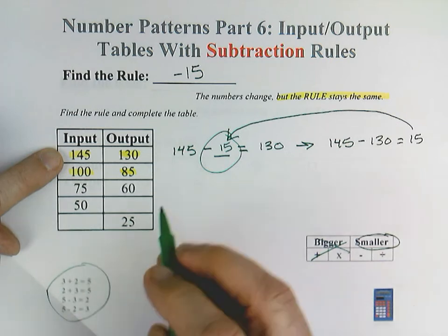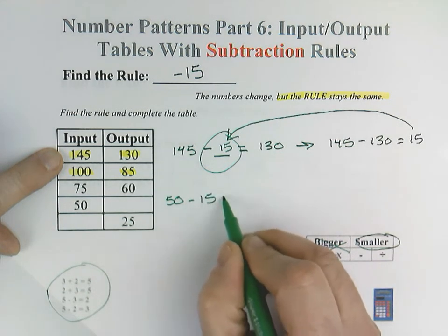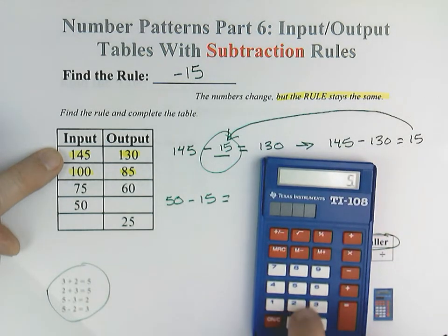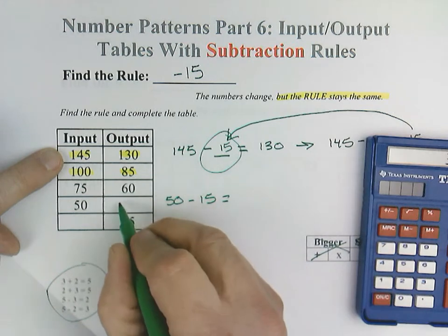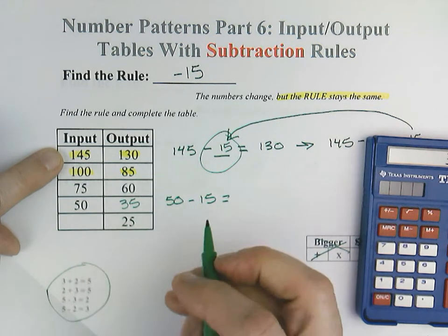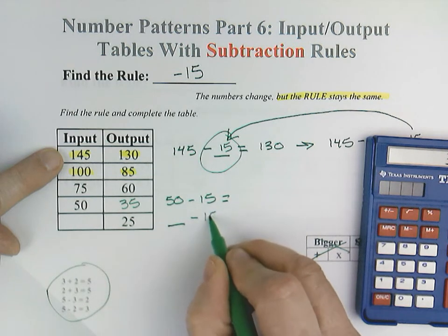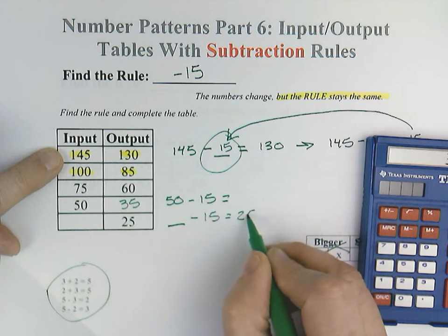All right, so here we've got 50 minus our rule of 15, and that would equal 35. Here, we're going to do the same thing, but we're going to start with our blank minus our rule of 15 equals 25.